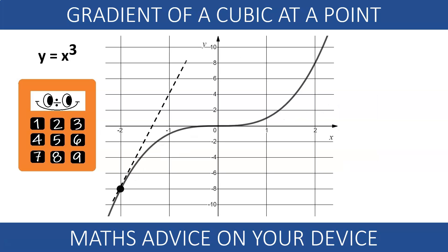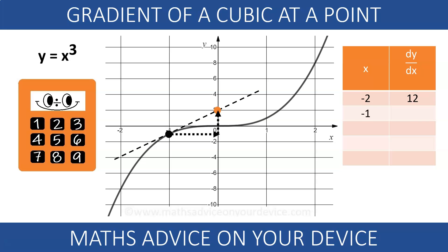The gradient at x equals minus 2 is the gradient of the tangent. Run 1 and rise 12. The gradient is 12. The gradient at x equals minus 1 is 3 over 1 or simply 3. The tangent at 0 is a bit more difficult to visualize, but its gradient is clearly 0.